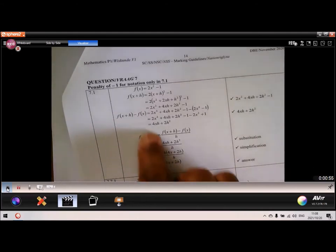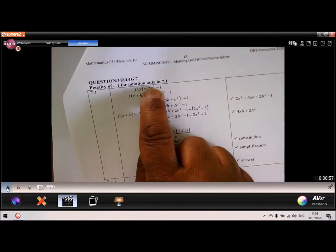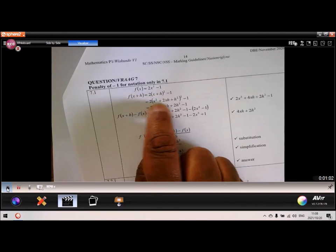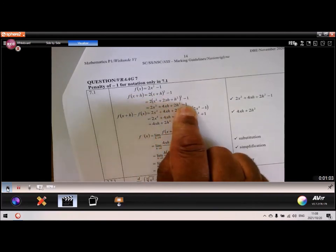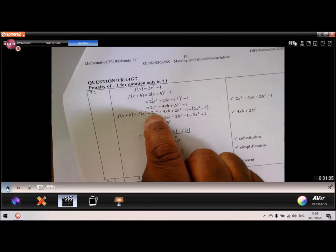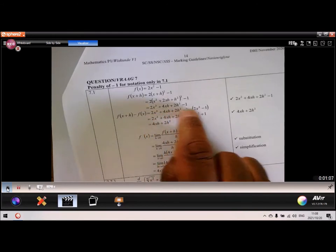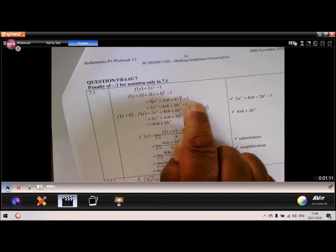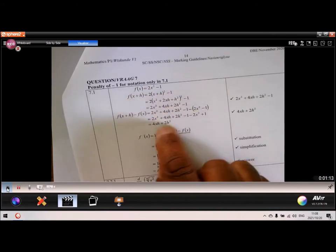So this x here must be replaced by x plus h. Simplify, remove the brackets and you get this. That is the f of x plus h, and subtract the f of x, which is that function there. Remove the brackets and you end up with this value.